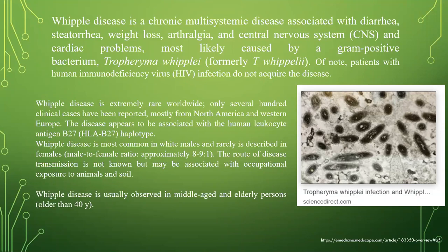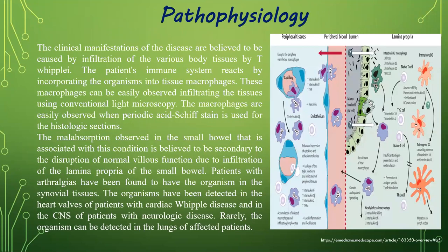Whipple disease is extremely rare worldwide, and only several hundred clinical cases have been reported, mostly in North America and Western Europe. The disease appears to be associated with the HLA-B27 haplotype. It is most common in white males and is rarely described in females. The route of disease transmission is not known but may be associated with occupational exposure to animals and soil. Whipple disease is usually observed in middle-aged and elderly patients older than 40 years. The clinical manifestations are believed to be caused by infiltration of various body tissues by T. whipplei.